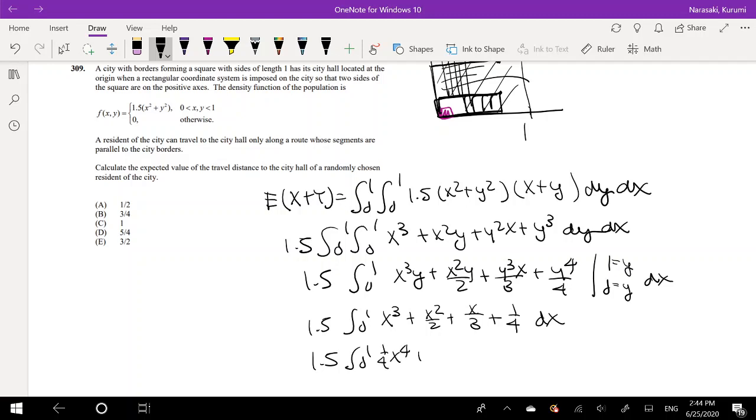So this is x to the fourth times 1/4 plus x cubed over 6 plus x squared over 6 plus 1/4 x. Integrating from 0 to 1.